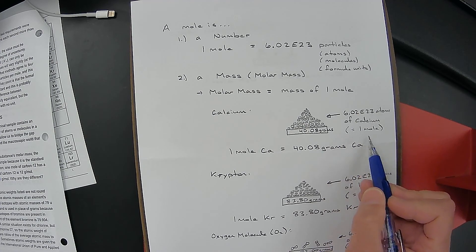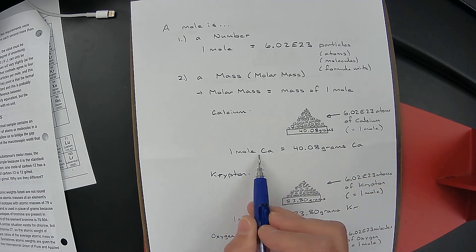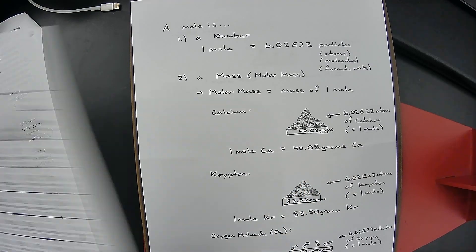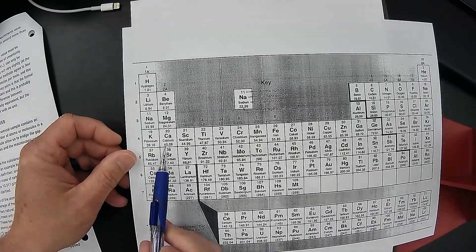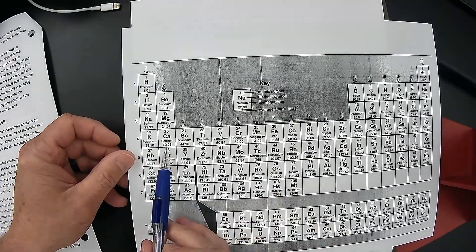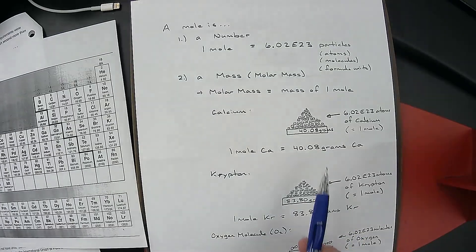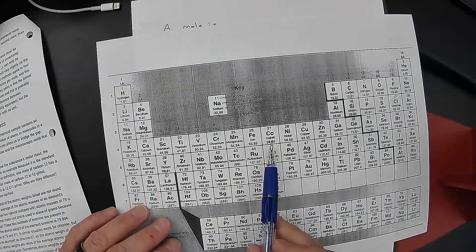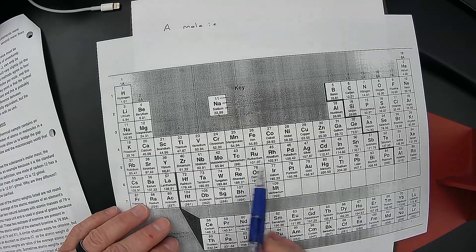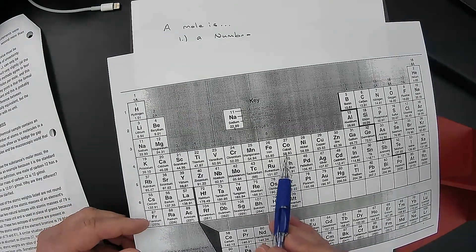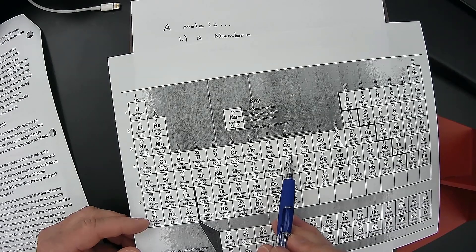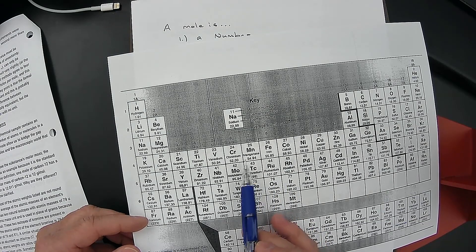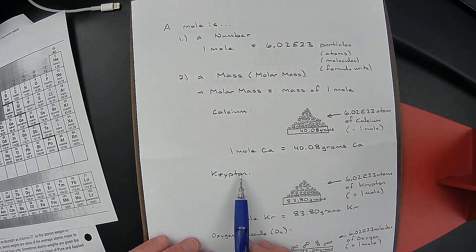One mole of calcium is equivalent to a specific number of grams. That number comes from the periodic table — the average atomic mass of calcium is 40.08, and that tells us the mass of a mole. The atomic weight for each element on the periodic table tells us the mass when we have 602 billion trillion atoms of that element — not 2 atoms, not a dozen atoms, but that many.